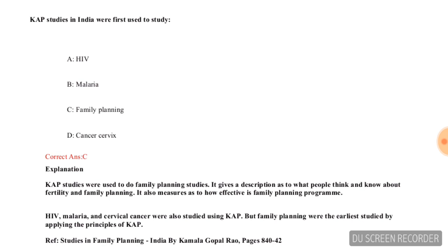Question 1: KAP studies in India were first used to study — options are HIV, malaria, family planning, or cancer cervix. The correct answer is option C, that is family planning. A brief explanation is given here; you can read it by pausing the video.